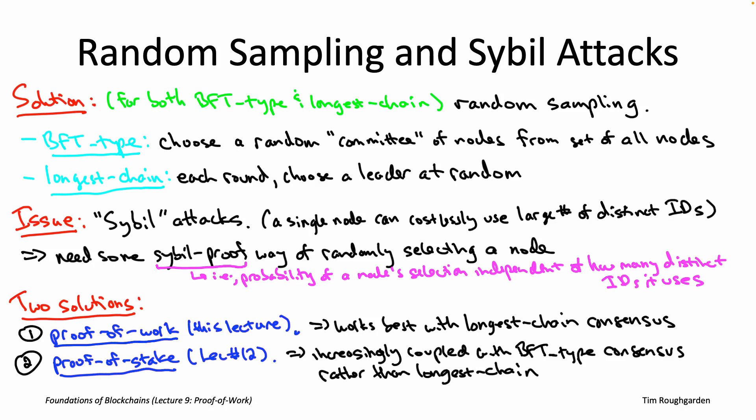BFT-type consensus is similar: if you remember how Tendermint works, each round has a leader that makes the initial block proposal that other nodes vote on. You'd use this random sampling procedure to select that node. For the voting nodes, maybe you want a committee of 100 nodes — you could invoke your random sampling box 100 times and interpret the results as a randomly selected committee. Random sampling gives us a way of reducing permissionless consensus to permissioned consensus, using the procedure to output the specific nodes tasked with various responsibilities.